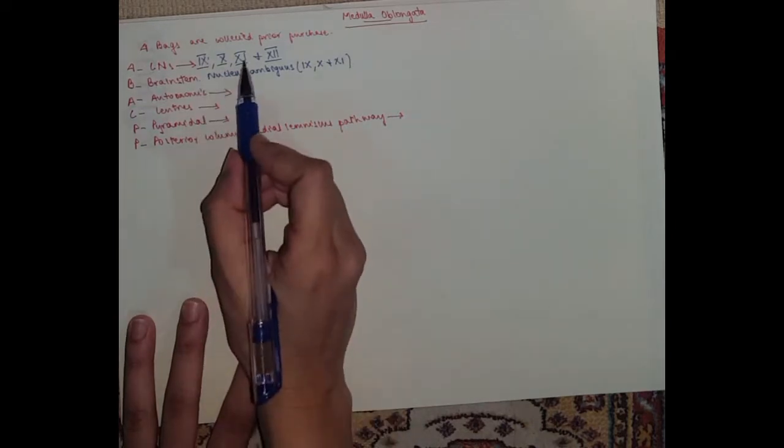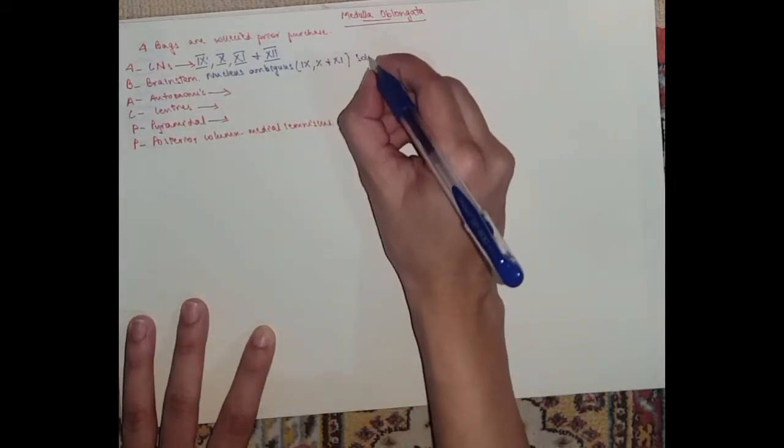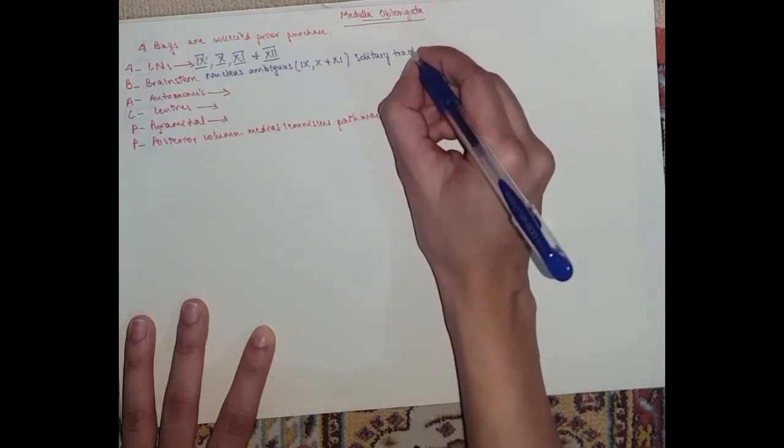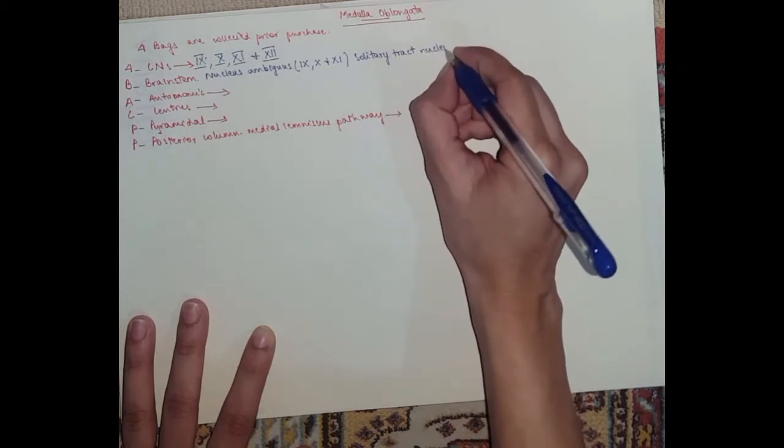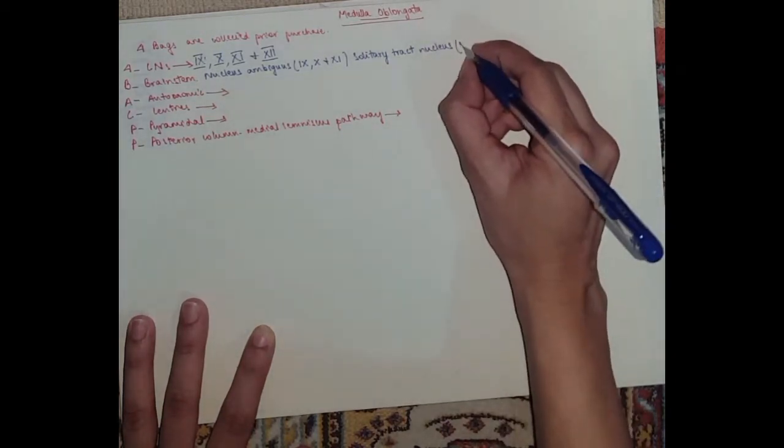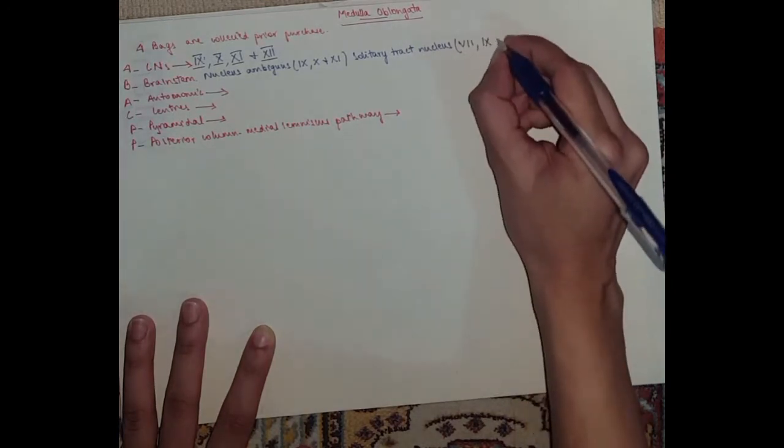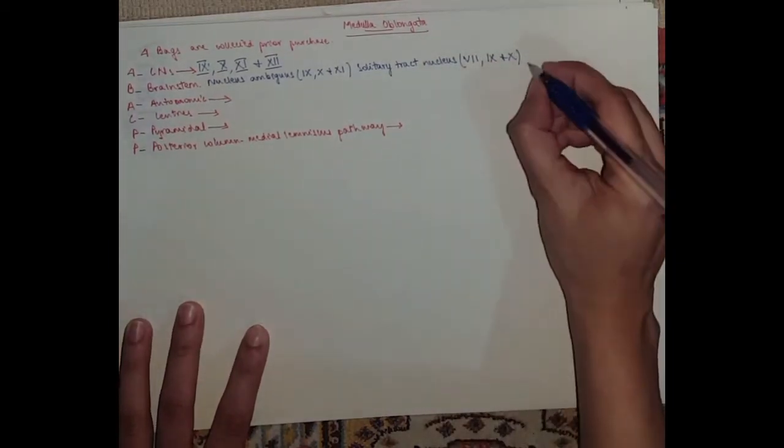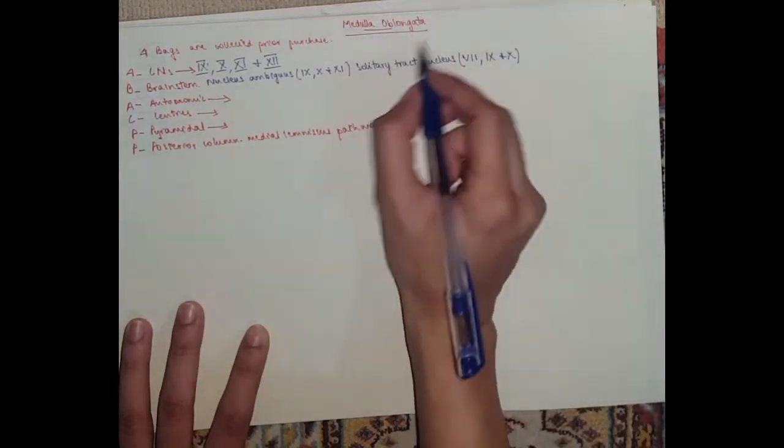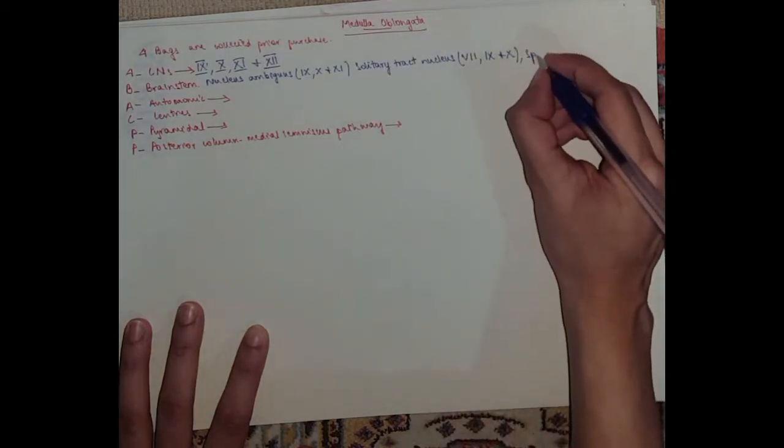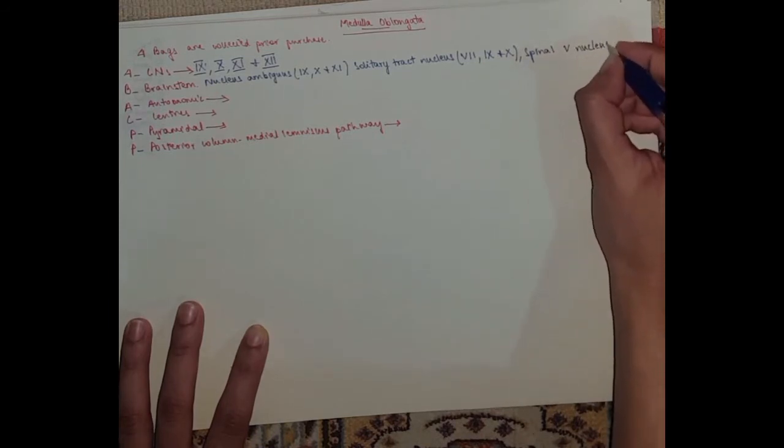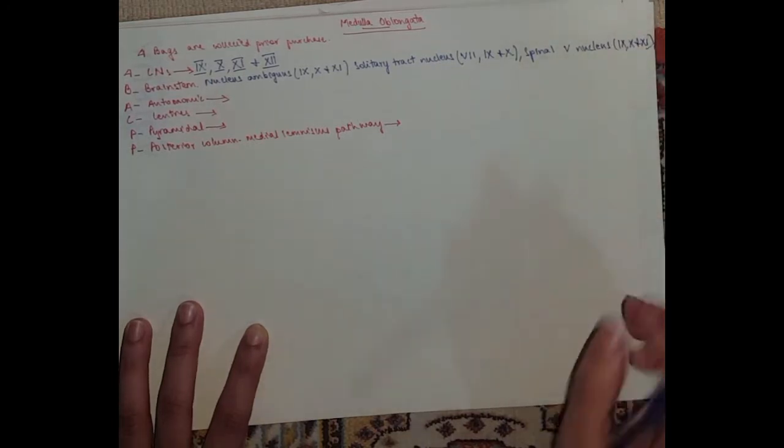Then you've got the solitary tract nucleus, which is for 7, 9, and 10. Seven is for facial nerve, but it's not in the medulla oblongata. And then you've got the spinal trigeminal nucleus, which is for 9, 10, and 11.